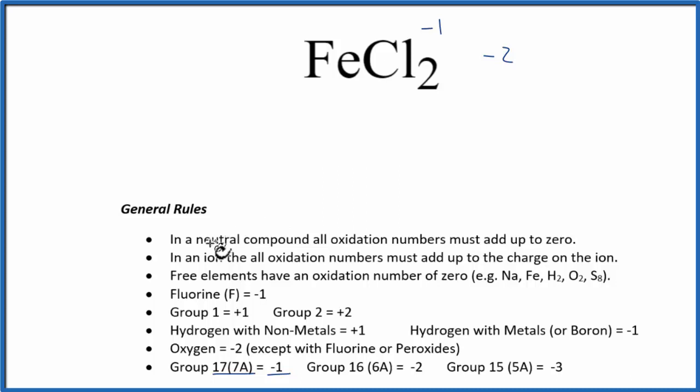That means if it's going to be a neutral compound, and FeCl2 is neutral, this has to be plus two. So the oxidation numbers here for FeCl2, we have negative one on each chlorine atom, and then the iron, that's plus two. Let's try one more.